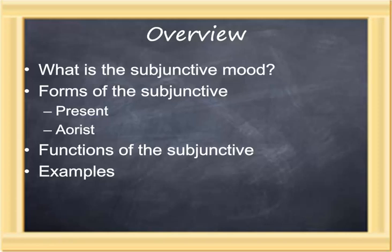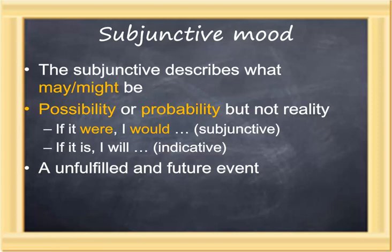We now switch our attention to the subjunctive mood. We'll ask: what the subjunctive mood is, how it's formed, how it functions, and then look at some examples. Unlike the indicative, which is claimed reality, the subjunctive describes what may or might be. The subjunctive is about possibility or probability, but not precise reality.